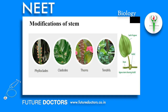Phylloclade: These are green, flattened structures bearing several nodes and internodes. The true leaves are reduced to spines or scales. They show unlimited growth. Some phylloclades also store food and water. Phylloclades are examples found in some xerophytic plants — example: Opuntia.